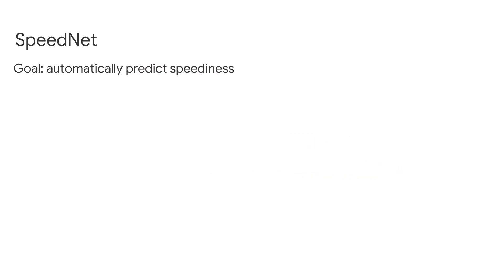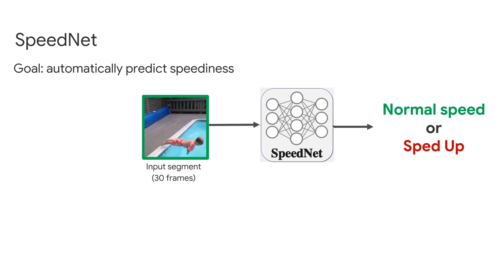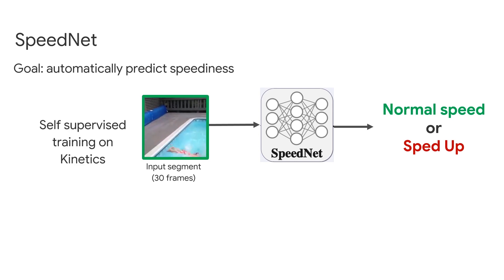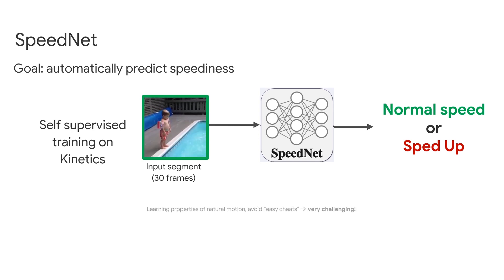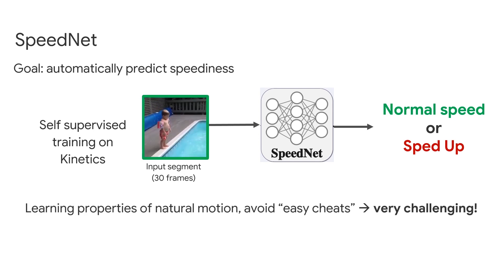We trained a network called SpeedNet to classify whether a given video clip is of normal speed or sped up. This binary classification task is simpler and easier to train than a regression network. We trained on a large dataset — Kinetics — in a self-supervised manner without requiring any manual labels. The main challenge is that the network can easily cheat by picking up signals unrelated to natural motion, such as aliasing introduced when generating sped-up examples. We worked hard to avoid such shortcut cues; please check the paper for details.